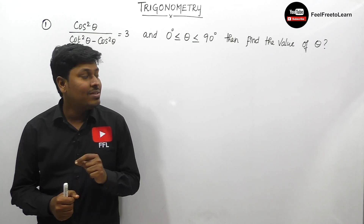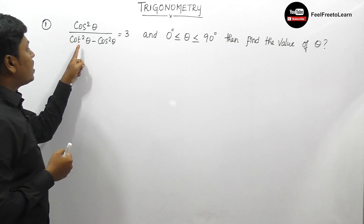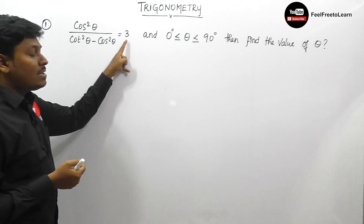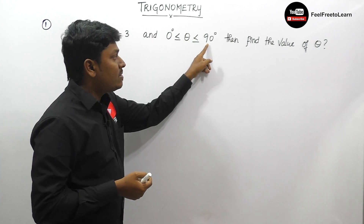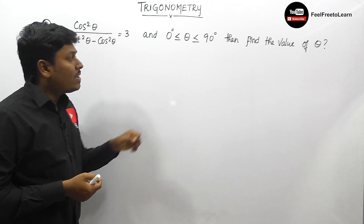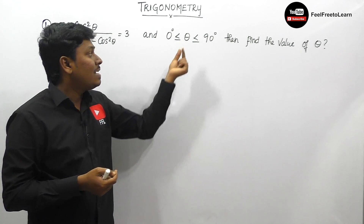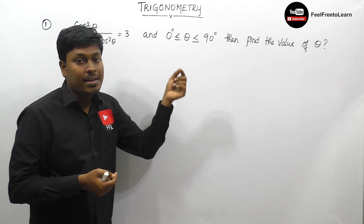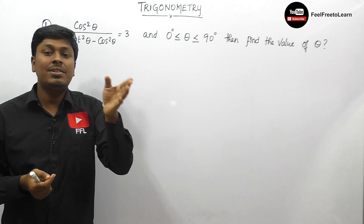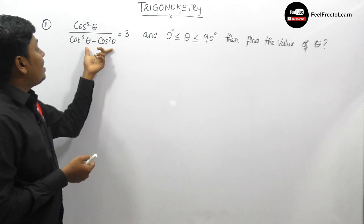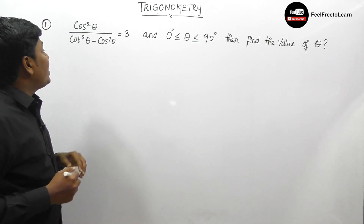Question number one: cos²θ divided by (cot²θ minus cos²θ) is equal to 3, and 0° ≤ θ ≤ 90°. Find the value of theta. The range 0° ≤ θ ≤ 90° means theta is arranged from zero degree to 90 degree. By solving this given expression we need to find the value of theta.